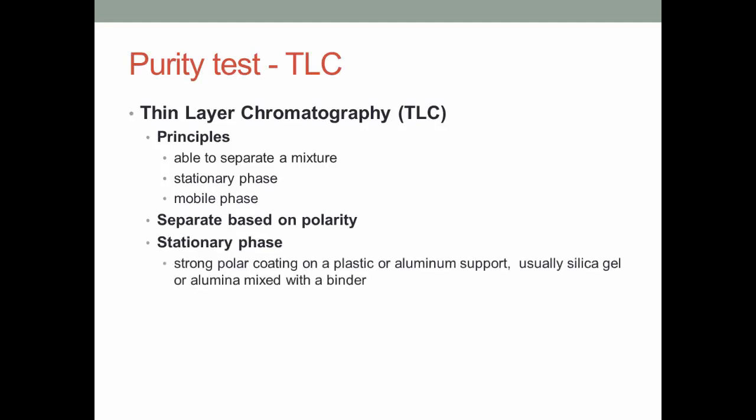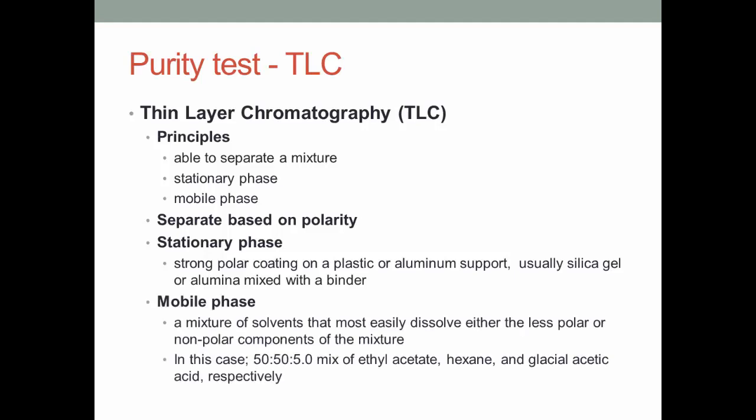The stationary phase is a strong polar coating on a plastic or aluminum support, usually a silica gel or alumina mixed with a binder. The mobile phase is a mixture of solvents that most easily dissolve either the less polar or non-polar components of the mixture. In this case, 50-50-5 mix of ethyl acetate, hexane, and glacial acetic acid, respectively.